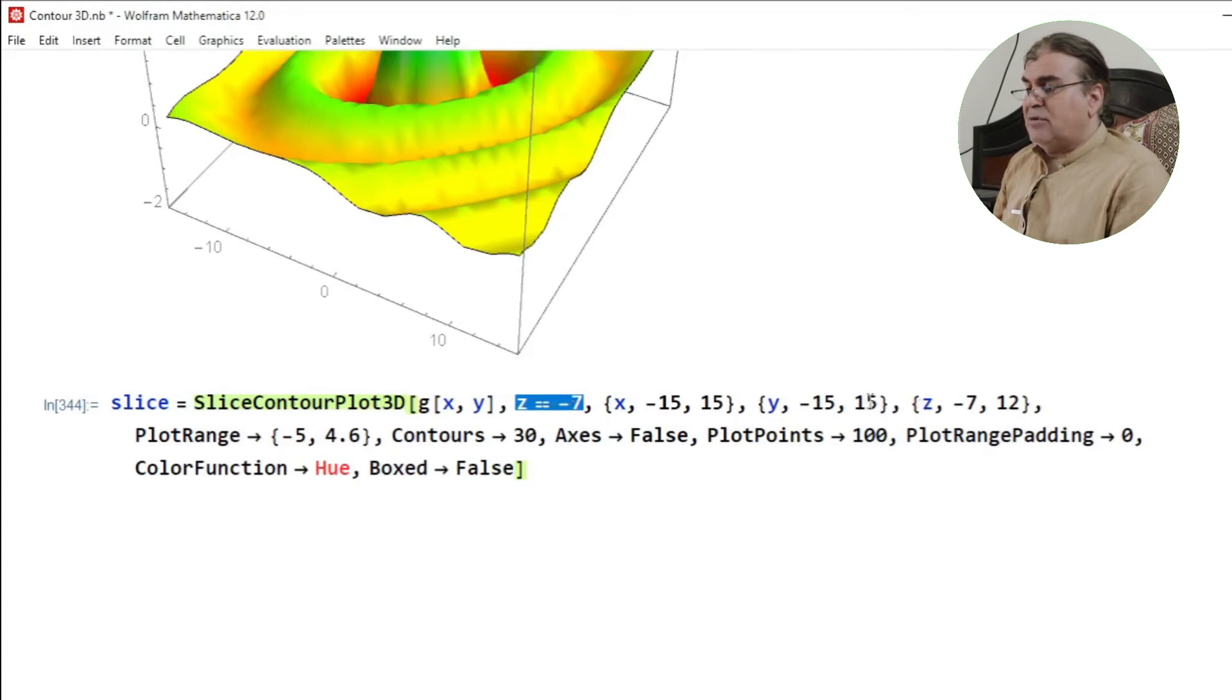And since the function is quite independent of the z axis but the SliceContourPlot takes 3 plotting variables, that's why in order to fulfill that condition I give arbitrary values to the z axis. And obviously this is not appearing in the equation, so whatever the value may be it won't make any difference.